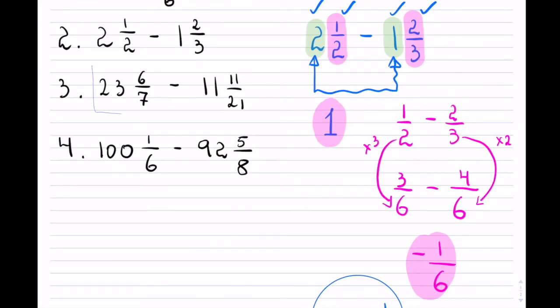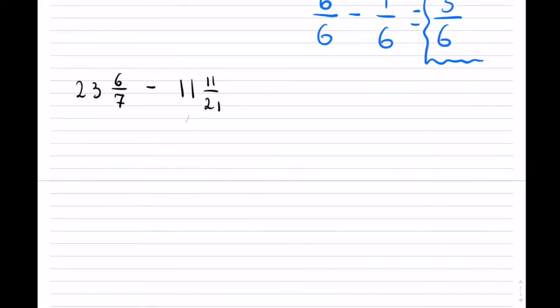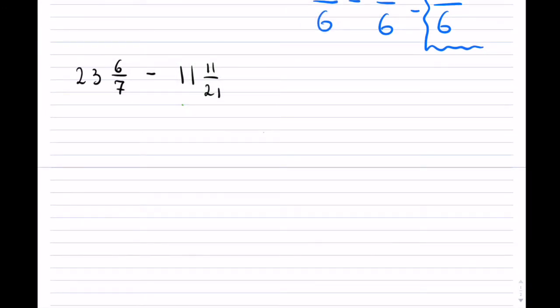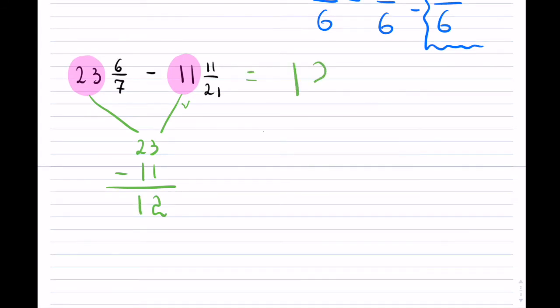Let's take up the third example. So let me copy this down and bring it a little bit further down here. So now what we have is 23 and 6 sevenths minus 11 and 11 21sts. So here, just like in the previous example, I will take the two whole numbers and go ahead and subtract them. So I have 23 minus 11, and we can do that. So 3 minus 1 and 2 minus 1, so that is 12. So that is my whole component.